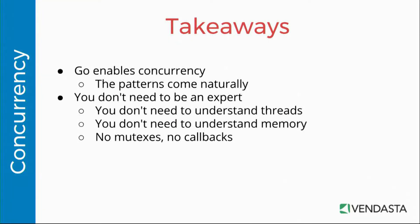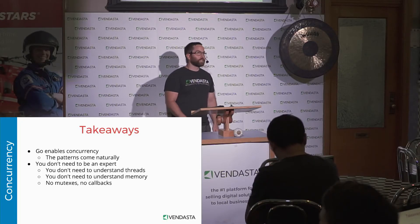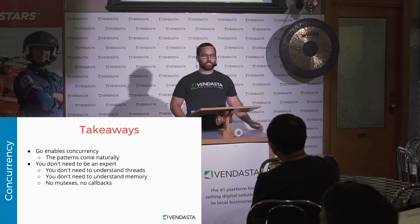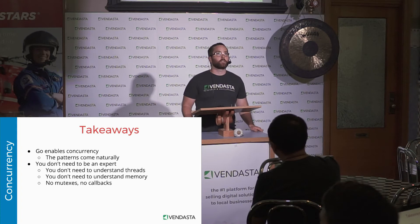So what are some takeaways? Go enables concurrency — it really lets you take advantage of the processor and it's super easy. You don't need to be an expert. All you need to do is use the two-letter "go" keyword and it's off doing its thing. You don't need to understand threads, you don't need to understand memory, there are no mutexes and no callbacks. It's just simple concurrency.